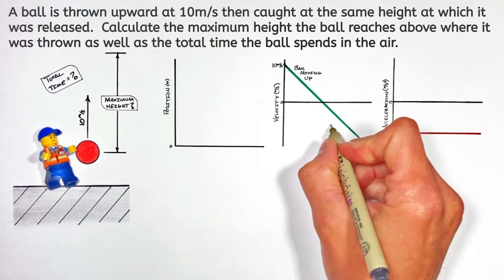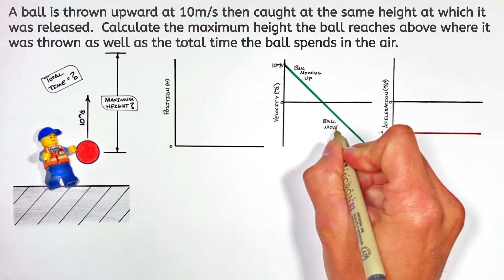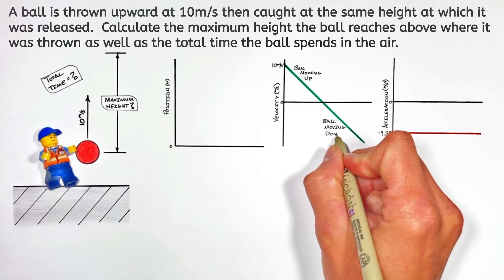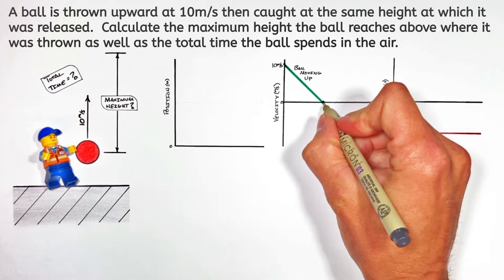The important thing to realize here is that even though the slope of the line is negative, when the velocity of the ball is positive the ball is moving up, and when the velocity of the ball is negative the ball is moving down.